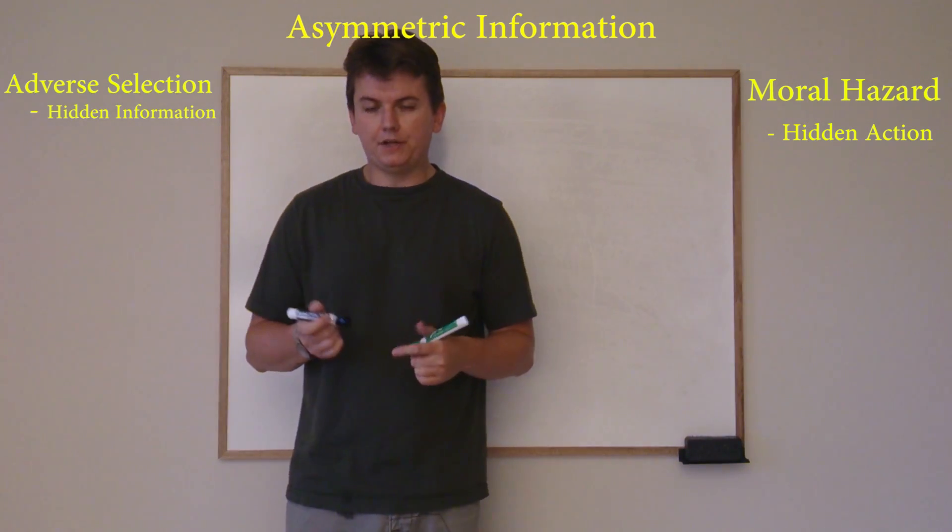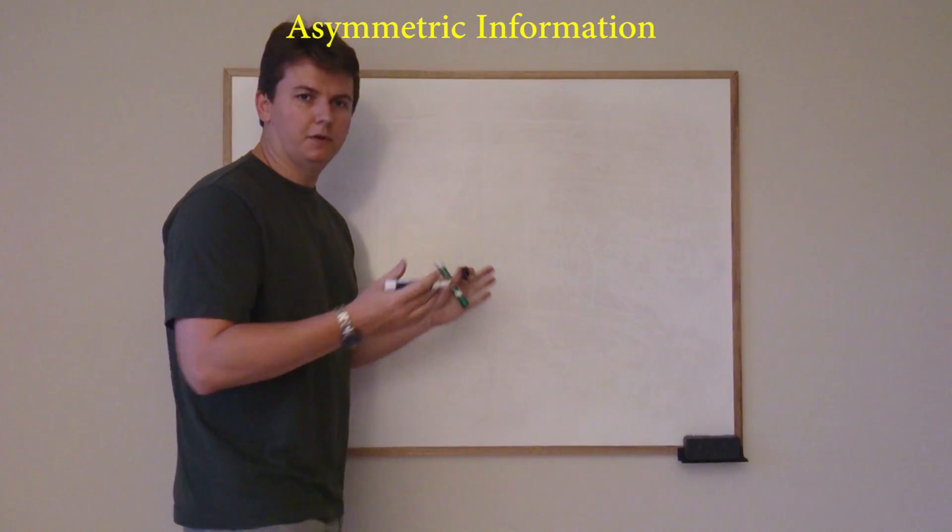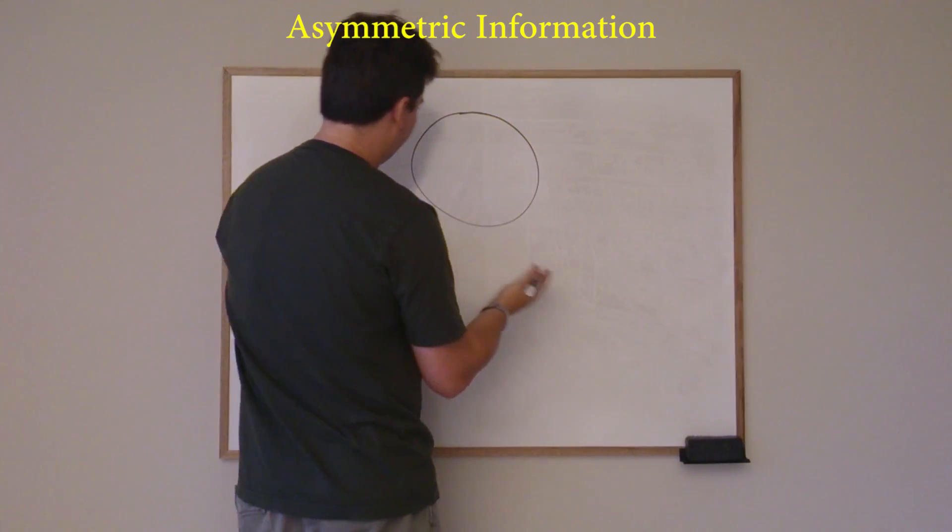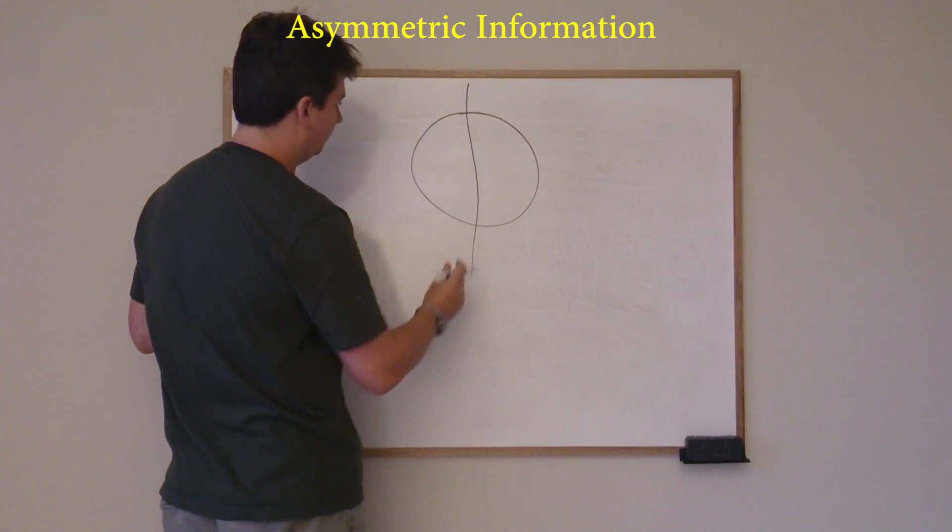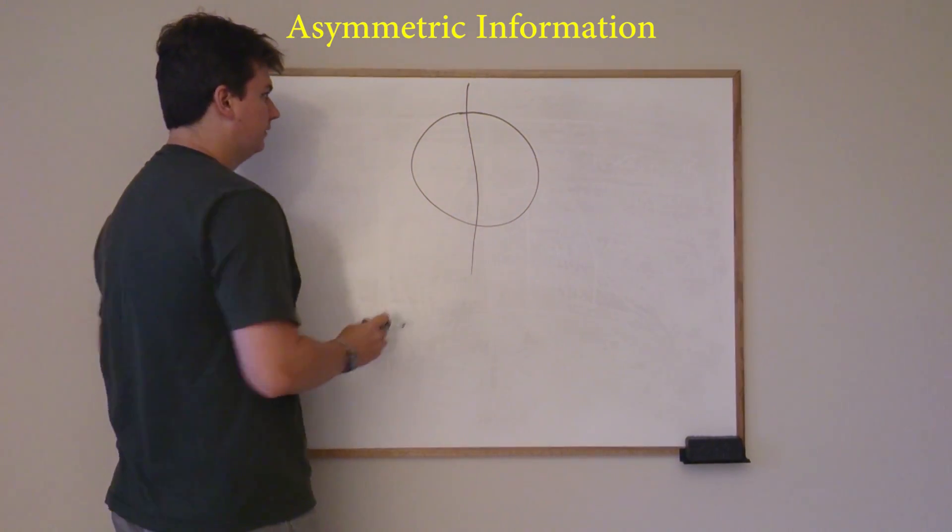So what is asymmetric information? It sounds really simple. It is actually. I'm just going to give you a basic example anyway. So pretend this is a circle that's perfect and I cut it in half, perfectly in half, and you'll see that it's symmetric. So both sides are the same.